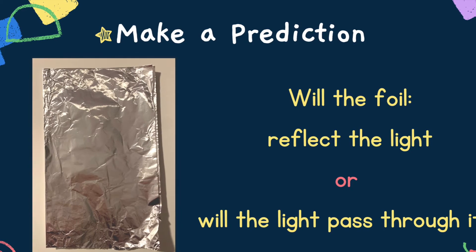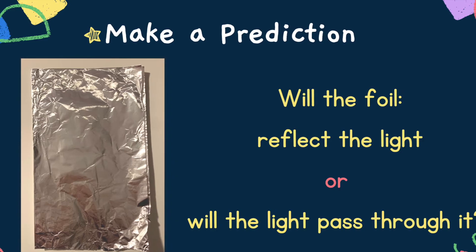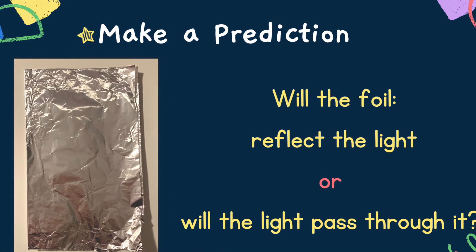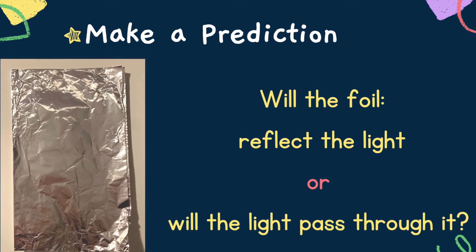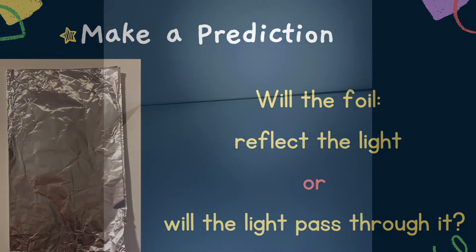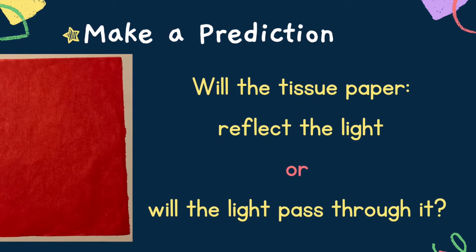Now I want you to make a prediction about the foil. Will the foil reflect the light? That means will it stop the light from passing through, or will the light pass through it? Have a think about your prediction and then we'll have a look. I'm going to put the foil in front of our light source, which is the torch. Have a look to see what happens — do you think that the foil reflects the light, which means stops it from passing through, or do you think the light goes through?